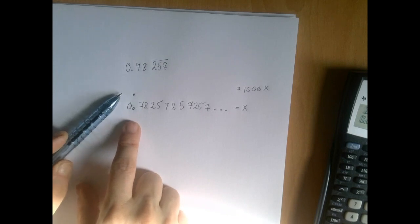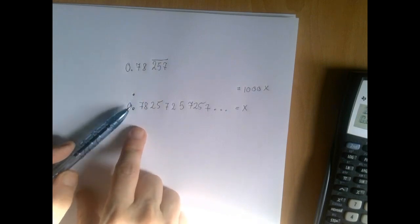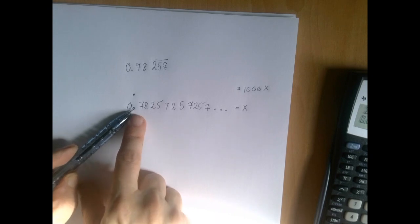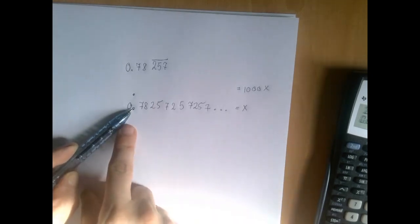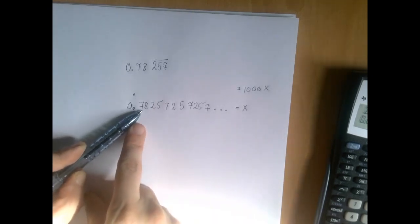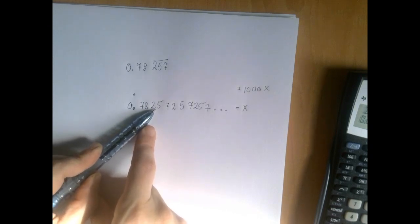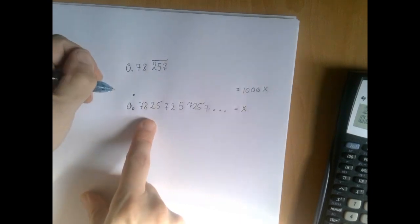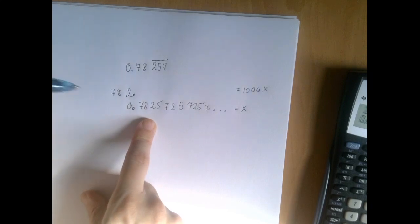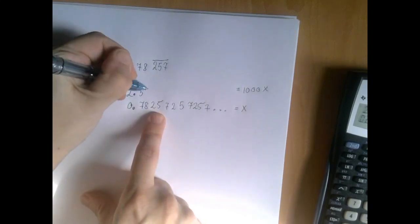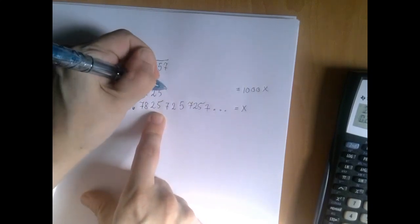We're going to write the answer aligned by the decimal point because the next step is going to be a subtraction. But if we multiply this number by a thousand, that means we're going to move the decimal point one, two, three decimal places. Then we get 782.57257. So let's do that.